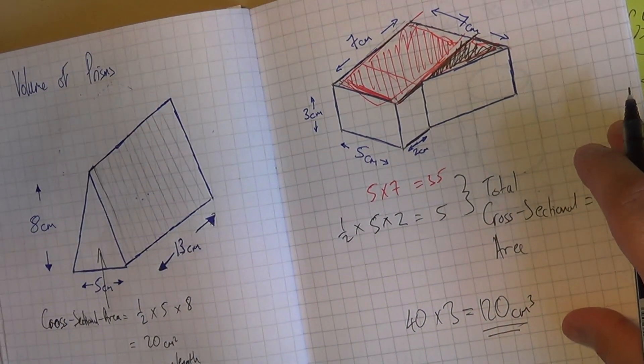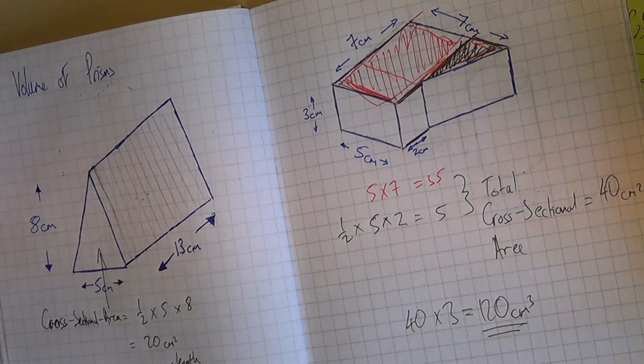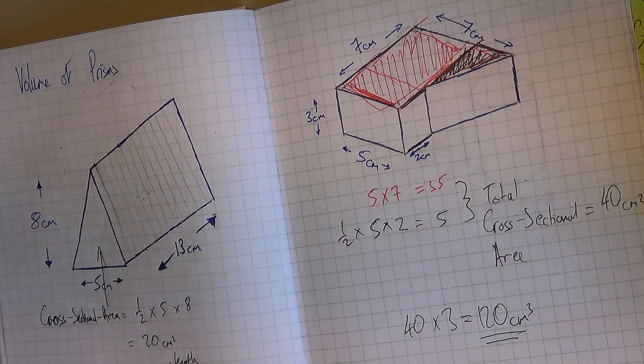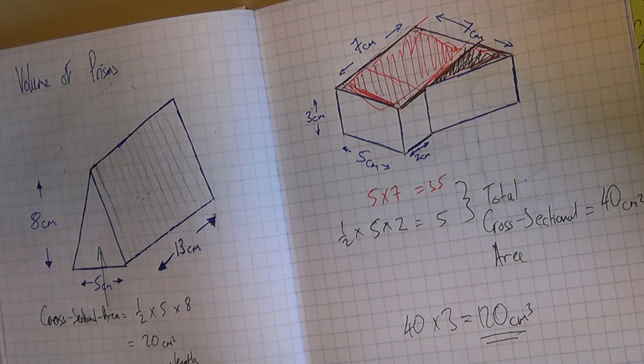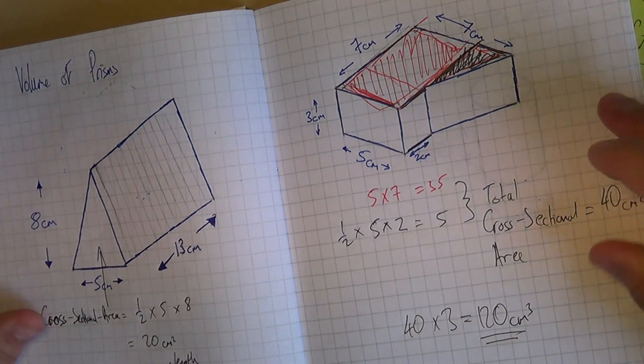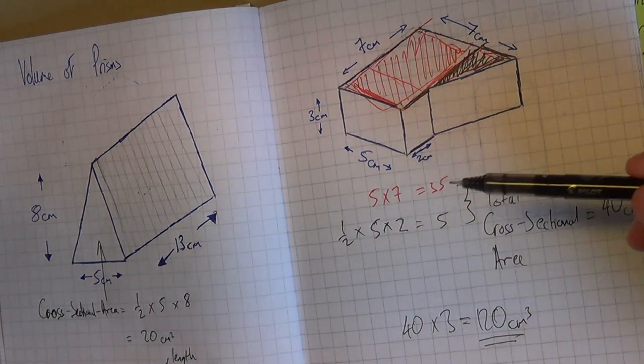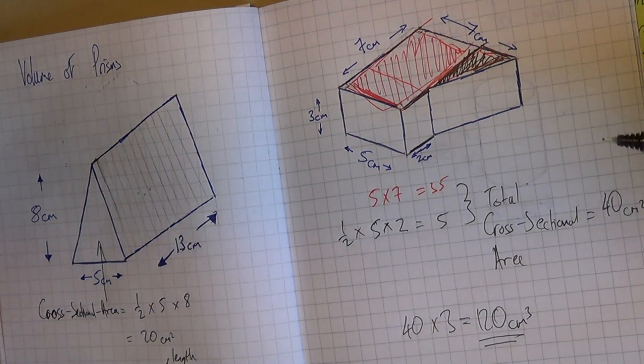So in any case, for any prism, you find the area of what's the cross-section, what's on the end, and you multiply it back by how, or multiply it down or along, by how long the prism is. And that will get you the answer.